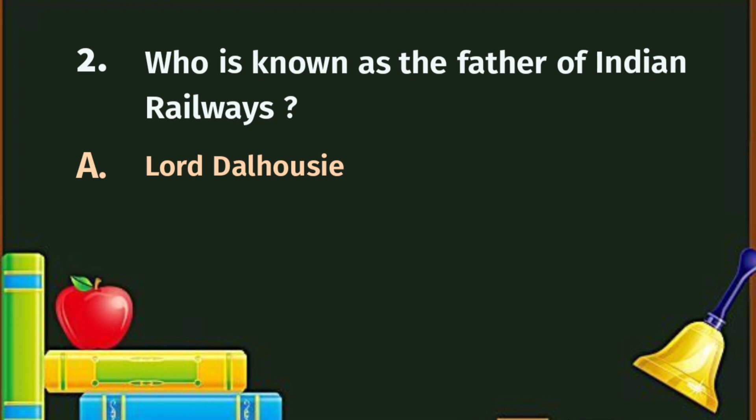Question number 2. Who is known as the father of Indian Railways? Indian Railways started in 1853. During this time, Lord Dalhousie was the Governor General of India. So the correct answer is Lord Dalhousie in 1853.